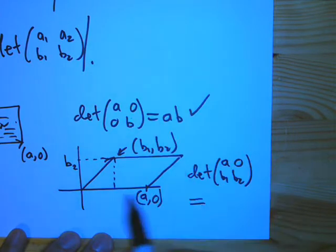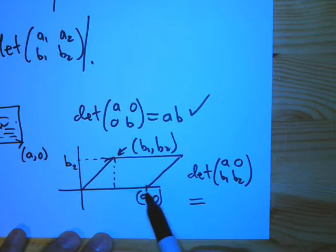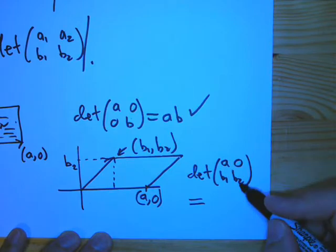But this guy, the area should still be A times this number B2. And that's exactly what you get here, AB2 minus 0.